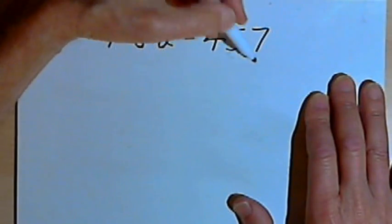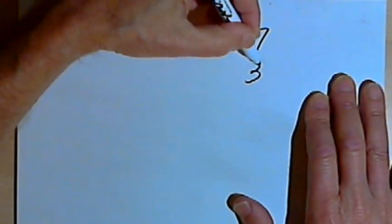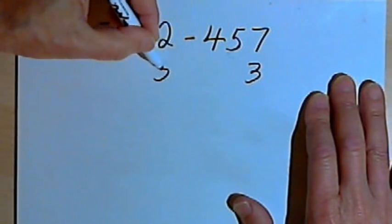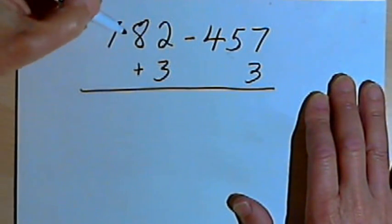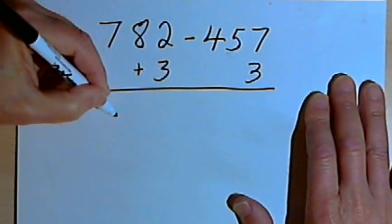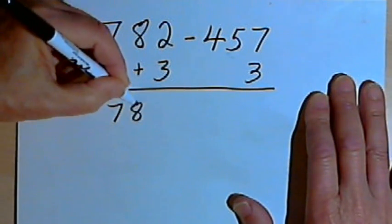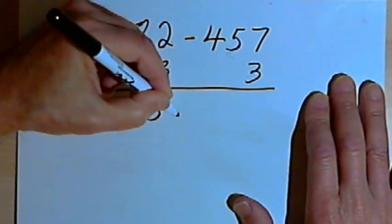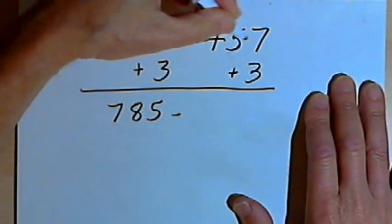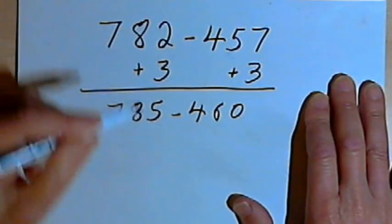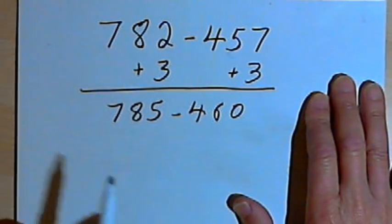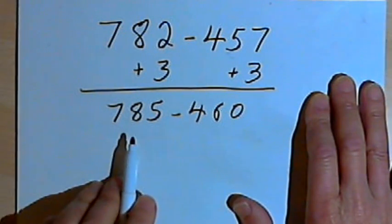So I'll turn that into a 0 by adding a 3 to that column, which means I have to add a 3 to the other number as well. So now I'm adding 3 to 782, and that's gonna get me 785. And I'm adding a 3 to the 457, and that gets me 460. So now I've just got a 0 in that units column, which will make my subtraction easier.